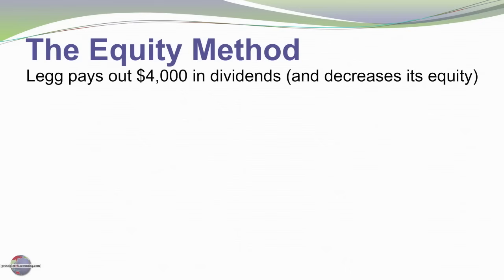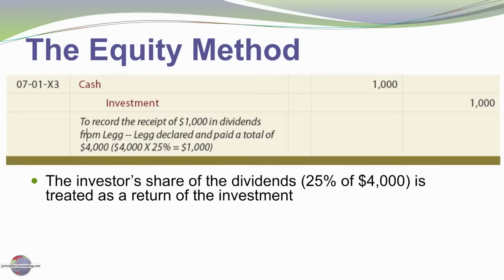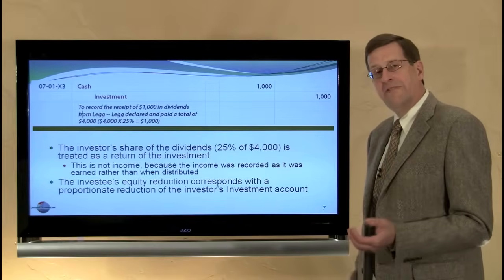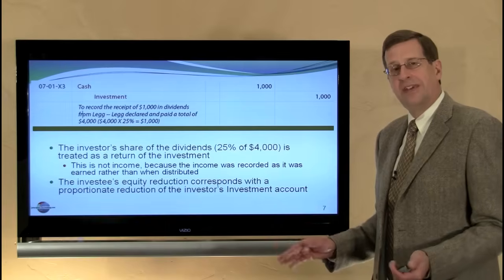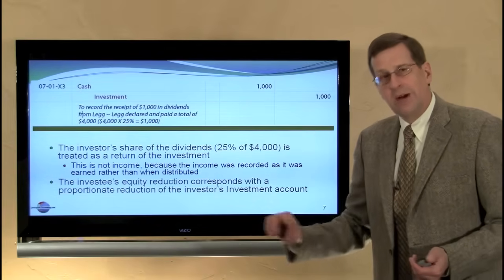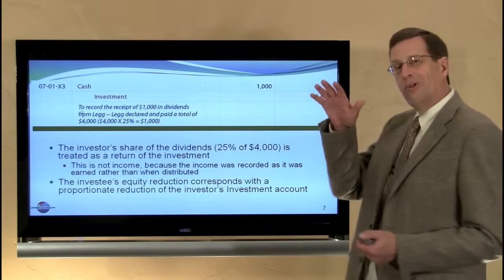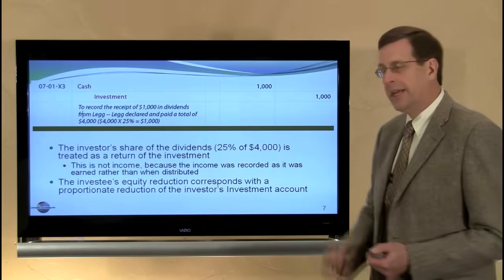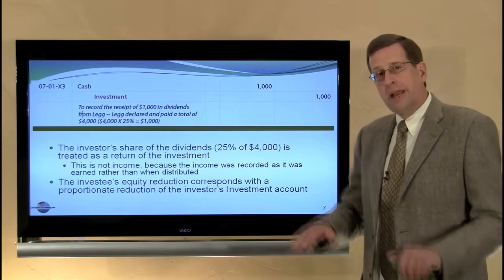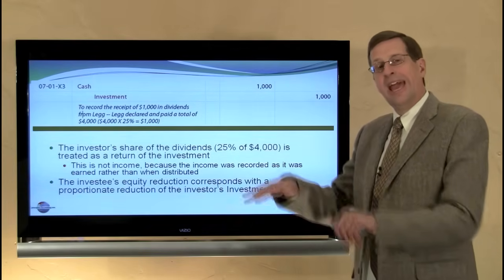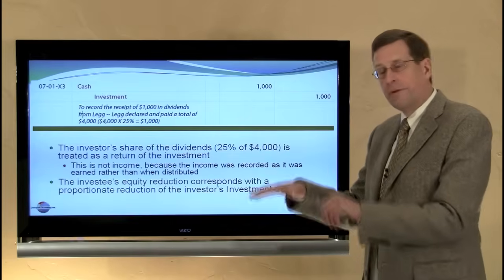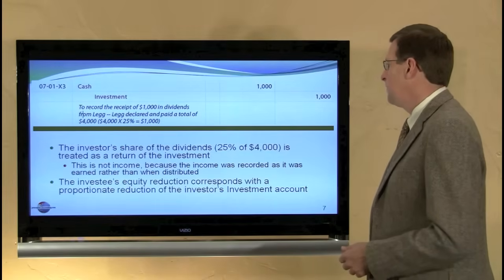If LEG pays out $4,000 in dividends, we expect to collect our 25% share, or $1,000. So we debit cash $1,000 and credit the investment account $1,000. We're reducing the investment account because dividends decrease the equity of the investee, and we're decreasing our investment account for our proportionate share. In many ways, our investment account is tracking the equity of the investee both up and down for earnings and dividends.